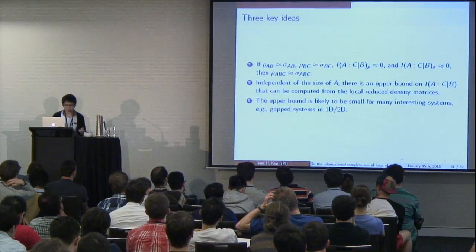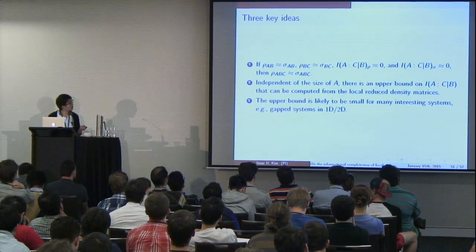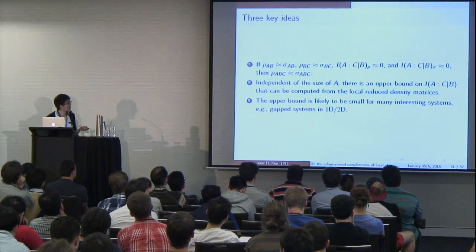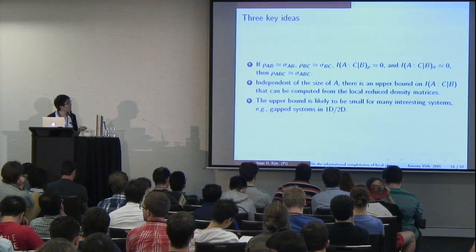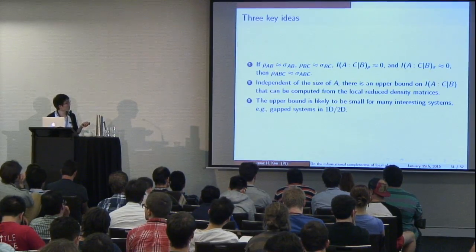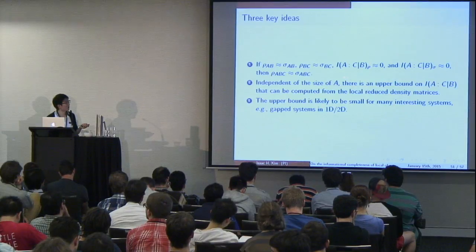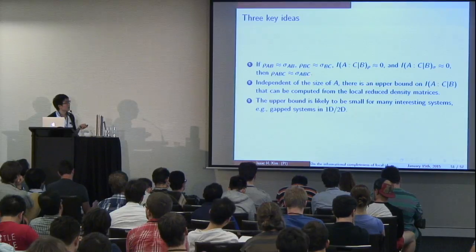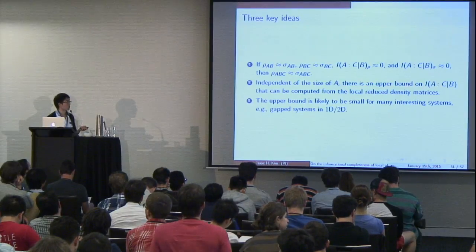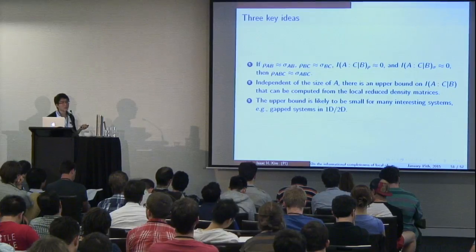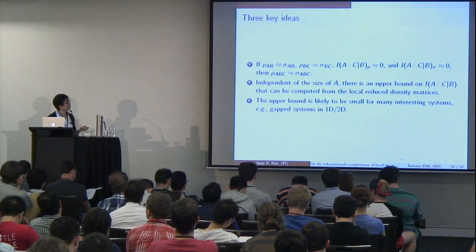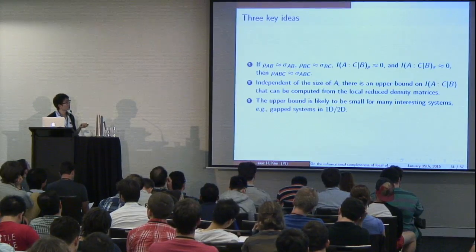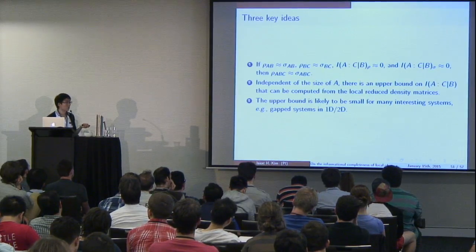So these were the three key ideas. First, if you have two states rho and sigma which are approximately conditionally independent — meaning the conditional mutual information is small — then their local reduced density matrices essentially fix the global state up to some very small error. Second, independent of the size of A, there is actually an upper bound on the conditional mutual information as long as we know something outside of ABC. And fortunately this upper bound is likely to be small for many interesting systems that physicists study.